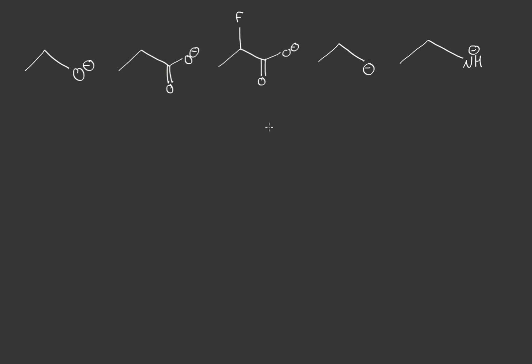From ranking acidity, we know that the acidity is based off the stability of the conjugate. Basically, if the molecule has resonance stabilization or the inductive effect, it makes it more acidic. Now, what about the other way around? If it's more basic or less basic, it has to do with how stable it currently is. So what we're going to do is look at each of these molecules and see how we're going to rank these.